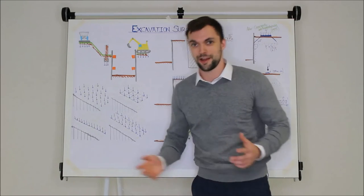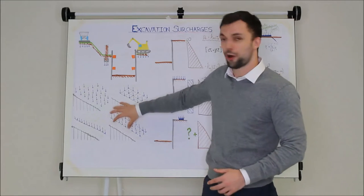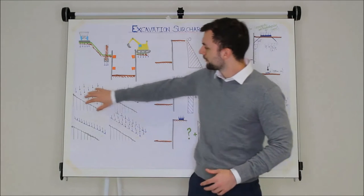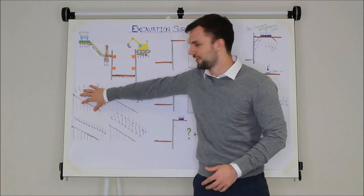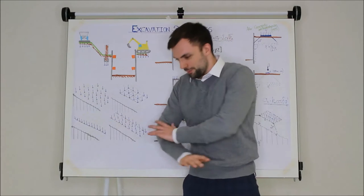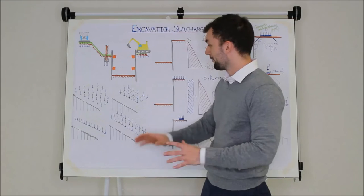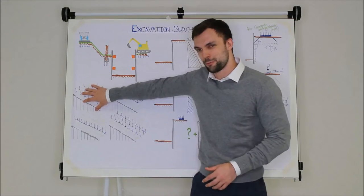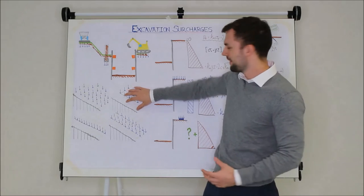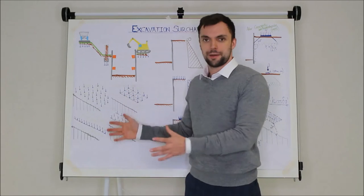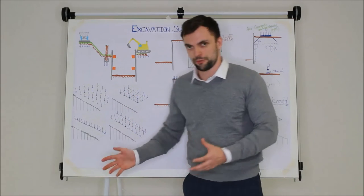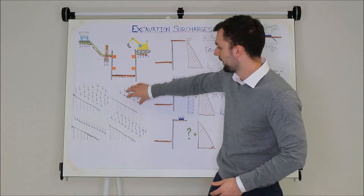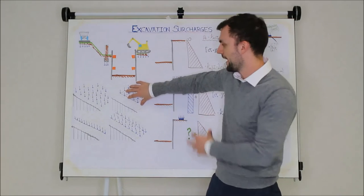Surcharges come in all kinds of different flavors and the main four are written up on the board here. You've got a blanket surcharge which is basically a uniform pressure just applied to the whole area of ground around an excavation. You then have an area surcharge similar to this but it's only in one localized area. This might be a crane pad or a pad foundation or something similar that just applies a concentrated force in that area.